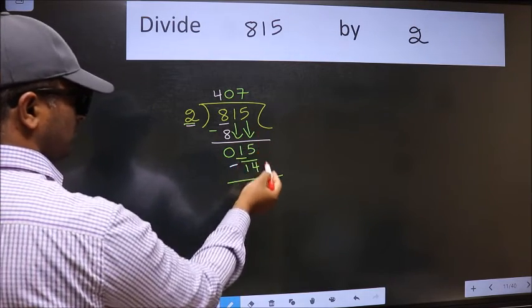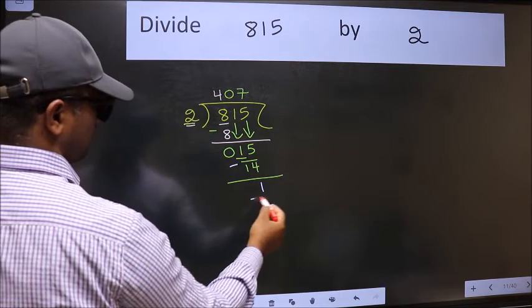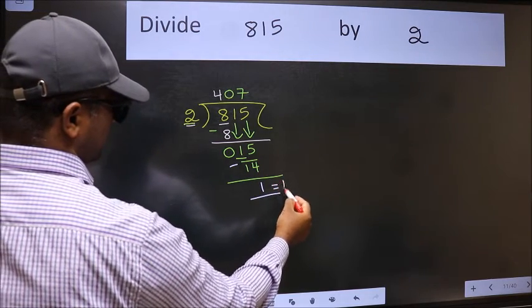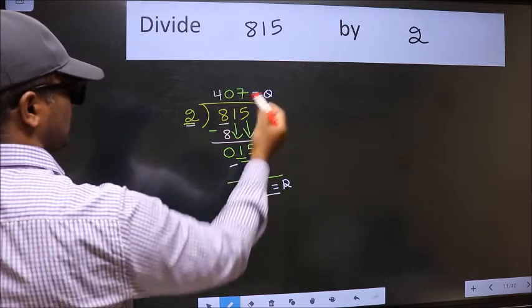No more numbers to bring it down. So we stop here. This is our remainder and this is our quotient.